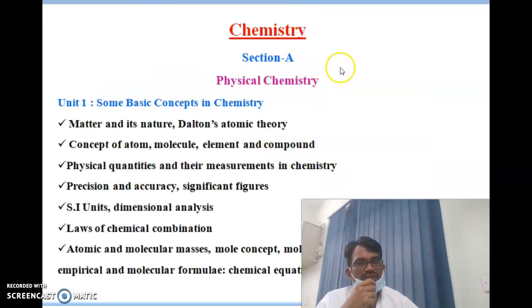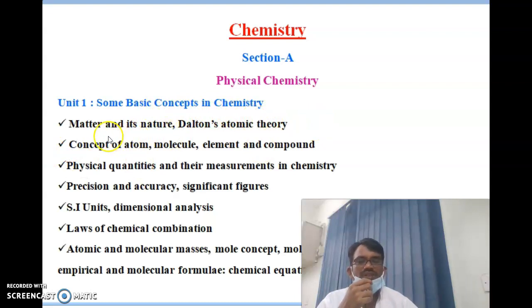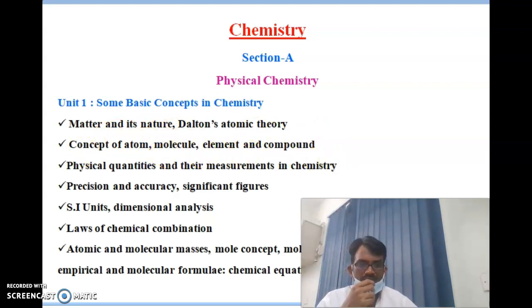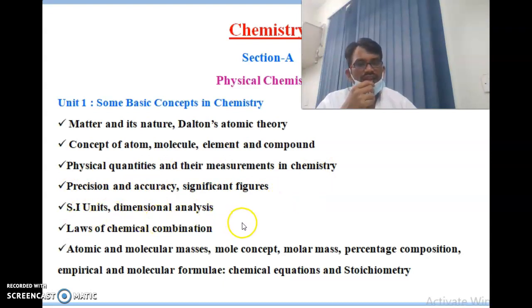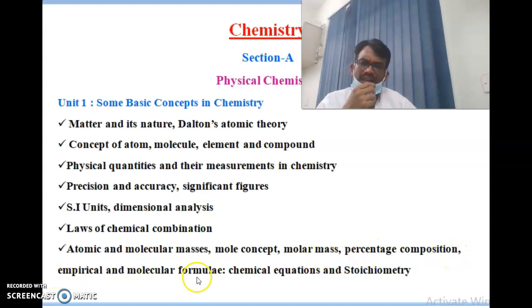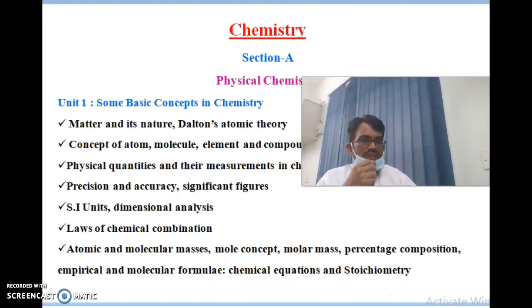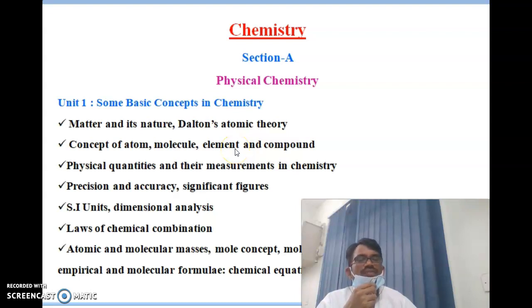Section A, physical chemistry — Unit 1 covers some basic concepts in chemistry: matter and its nature, Dalton's atomic theory, concept of atoms, molecules, elements and compounds. Also included are physical quantities and their measurement, precision and accuracy, significant figures, SI units, dimensional analysis, law of chemical combination, atomic and molecular masses, mole concept, molar masses, percentage composition, empirical and molecular formula, and chemical equations.